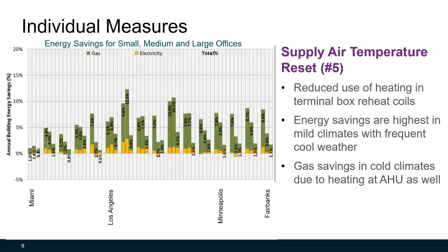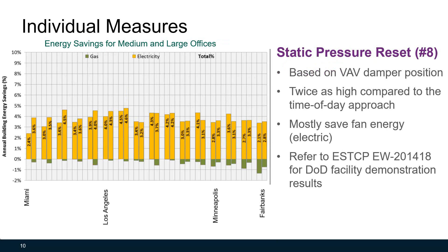The next measure is supply air temperature reset. The air handling unit supply air temperature reset reduces the use of heating in terminal box reheat coils, and the energy savings are highest in mild climates with frequent cool weather such as Los Angeles or San Francisco. The energy savings for the static pressure reset strategy is mostly on electricity — this strategy primarily saves fan energy.